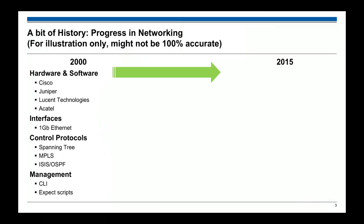Now if you look at networking in the year 2000, we had Cisco, Juniper, Lucent Technologies, and Alcatel. The average good interface speed was one gigabit. The protocols were basically Spanning Tree, MPLS, and the usual interior gateway protocols like IS-IS or OSPF. Back then Spanning Tree wasn't really a pleasure — if something went wrong you had to wait a minute until everything was back to normal.